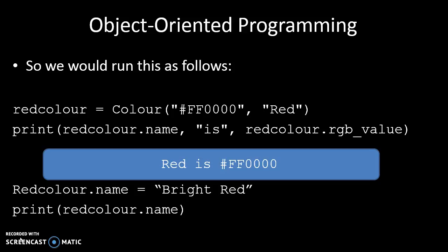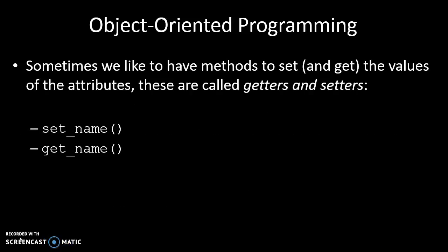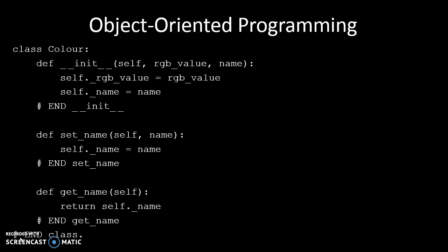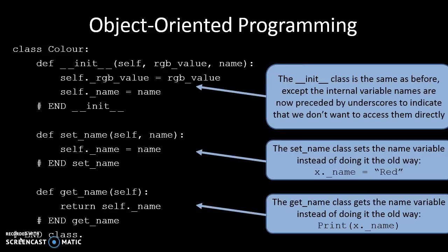Sometimes, instead of assigning the name directly and printing it out, we create methods called getters and setters. The getter gets the name, and the setter sets the name in this case. Our INIT is the same, except we've changed the variable names to underscore RGB and underscore name, just to indicate to the programmer that these are private — that you shouldn't be accessing self underscore name directly.